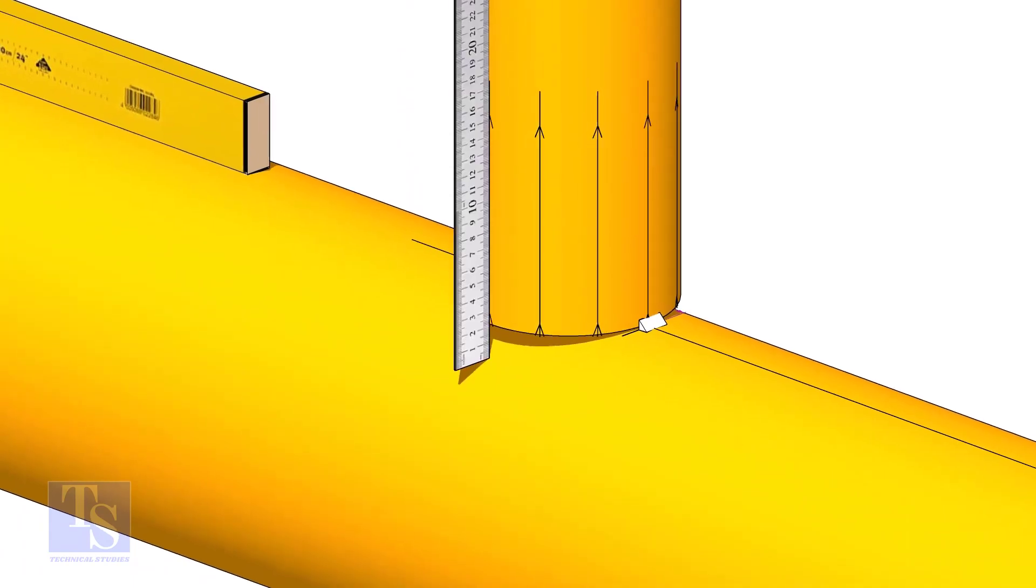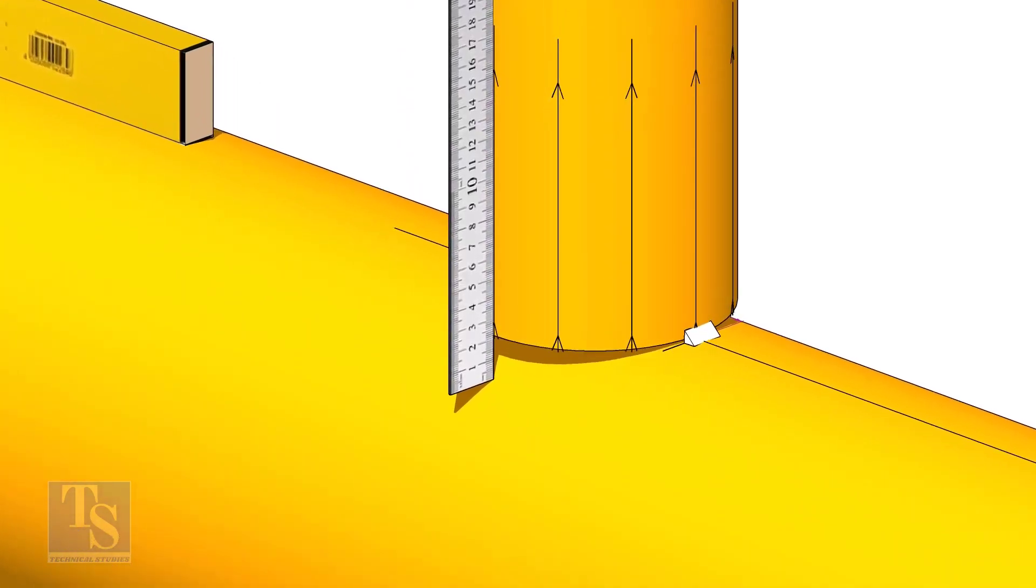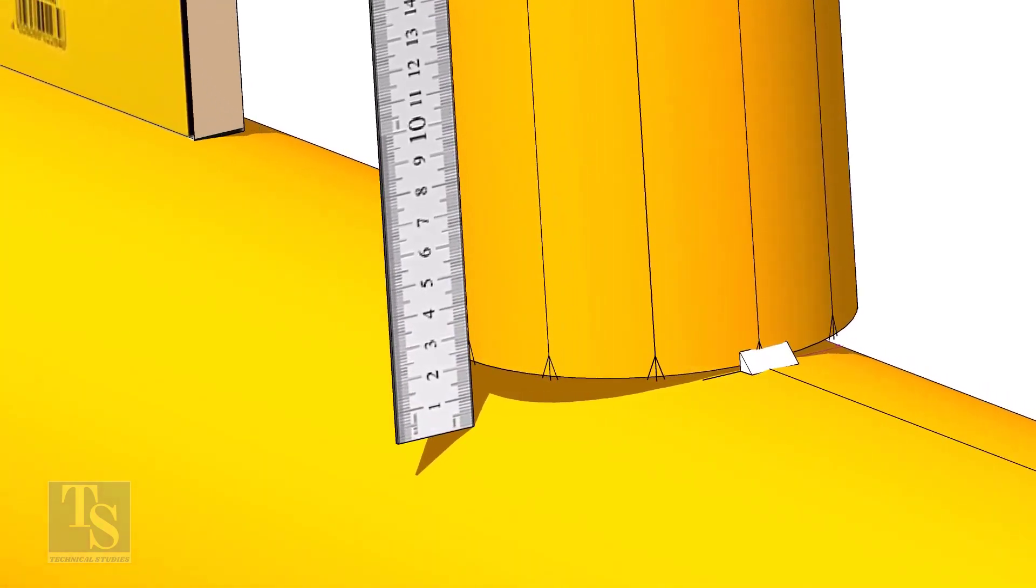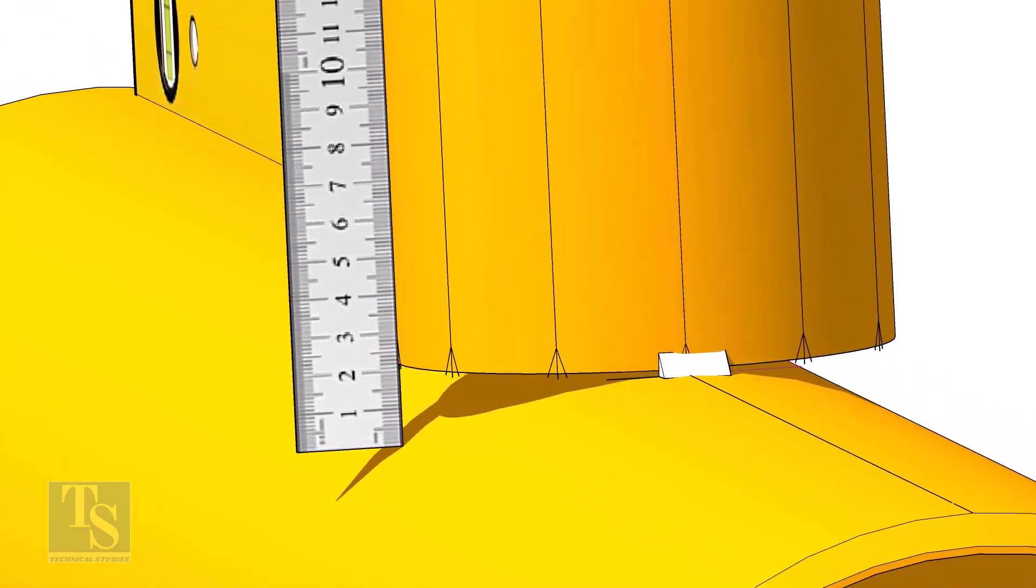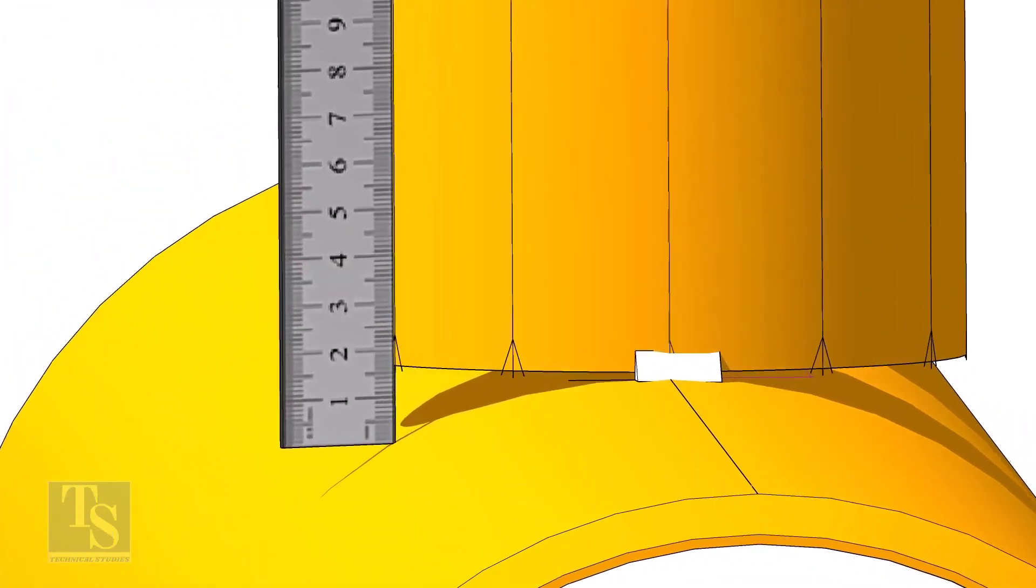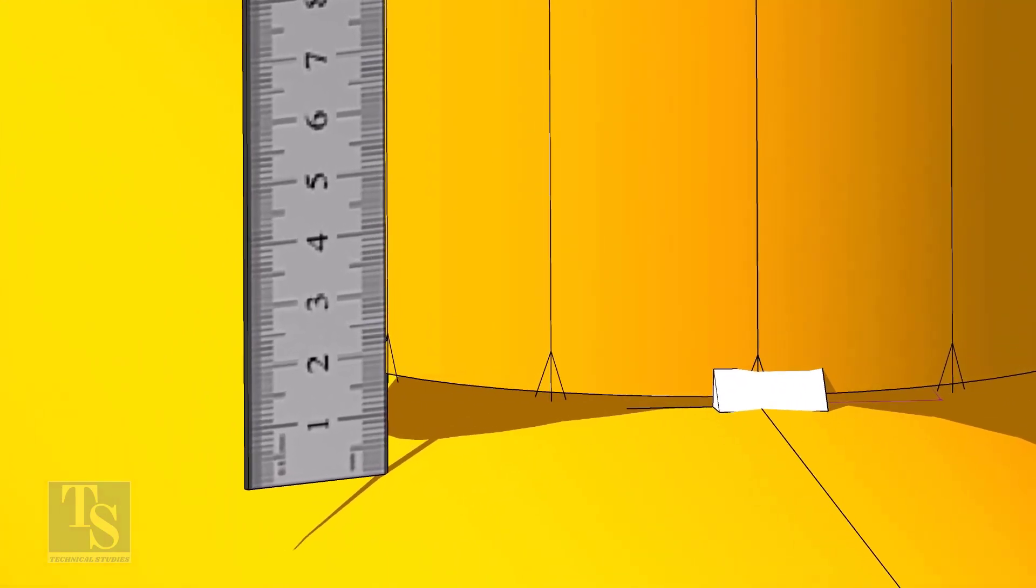Check the gap between the header and the branch as shown. When you measure, make sure the scale is vertical and is on the line on the branch pipe. Move the scale to the next vertical marking on the branch. Mark the distance on the branch from the header. In this case, it is 22 millimeters.